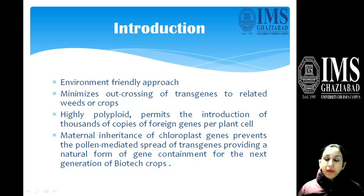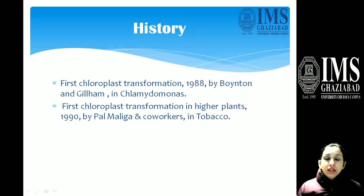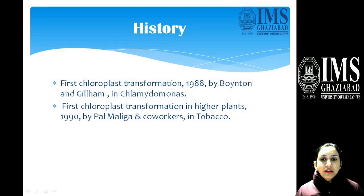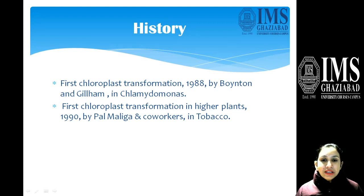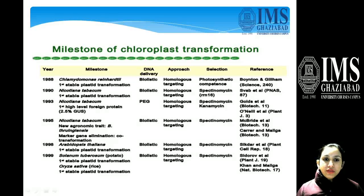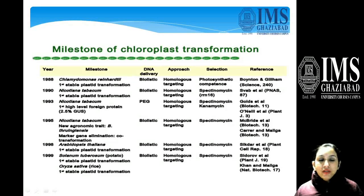For the history of chloroplast engineering, the first chloroplast transformation was done in 1988 by Boynton and Gillham in Chlamydomonas, and it was first produced in tobacco in 1990 by Pal Maliga and co-workers. These are the milestones of chloroplast transformation, and references are also shown there.